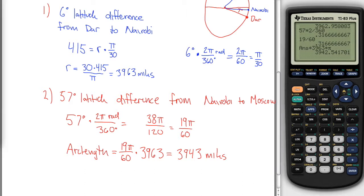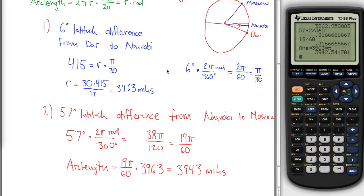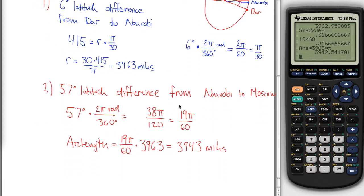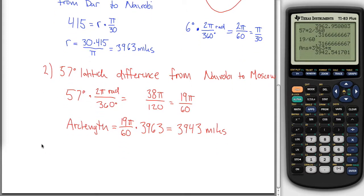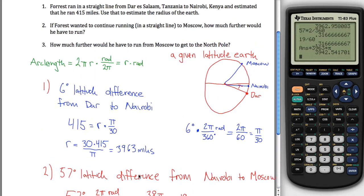Alright, so that's the answer to part two. If you wanted to run from Nairobi to Moscow, you'd have to go 3,943 miles if you ran in a straight line, if you ignored the fact that there's probably lots of mountains and oceans. Rivers anyways in the difference, maybe a sea between the two of them. Similarly, from Dar to Nairobi, I think Kilimanjaro gets in the way, but that doesn't really matter for this problem. We're just assuming the earth is a perfect sphere.